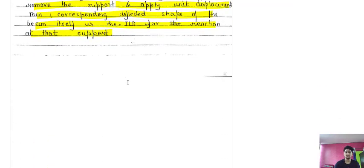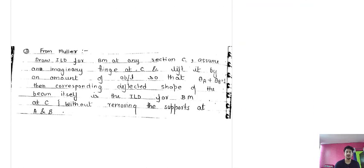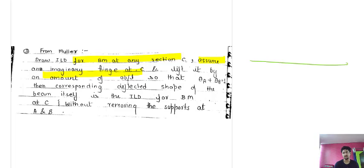For drawing the ILD for bending moment at section C, assume an imaginary hinge at C and lift it by an amount of a·b/L. Here 'a' is the span from A to C and 'b' is the span from C to B, and L is the total length where a + b = L.